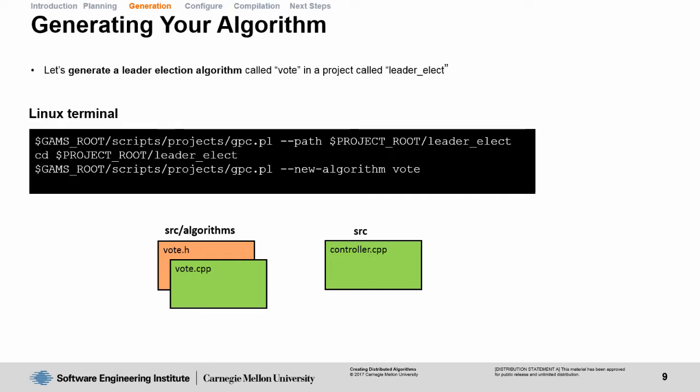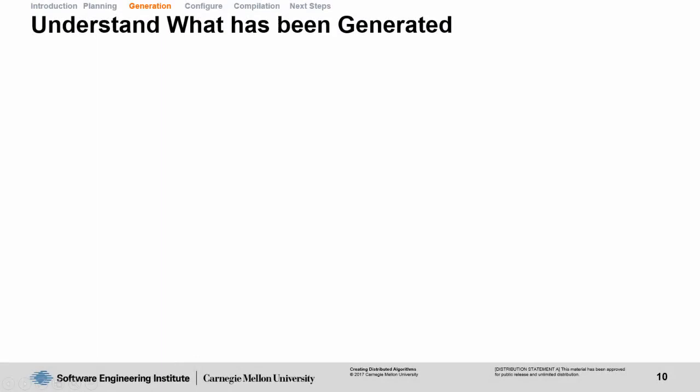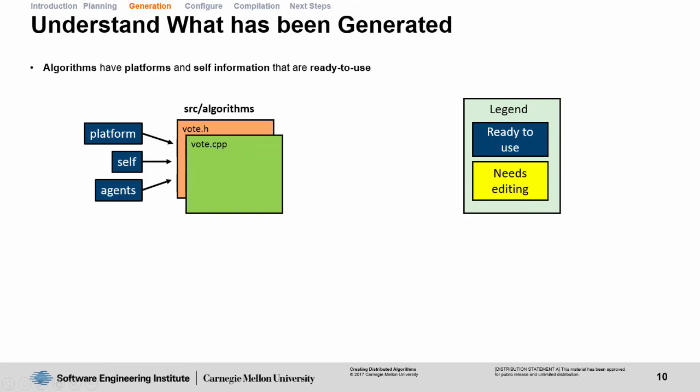After you run these GPC commands, you're going to have three new files created in your directory structure. The first two files are vote.h and vote.cpp in your source algorithms folder. And the third file is the controller.cpp file in your source directory. You're not going to have to modify your controller.cpp file, but we will be modifying our vote.h and vote.cpp file. Don't worry, these files are also included as part of the tutorial materials. Let's talk about what has been generated by the GPC. Algorithms have platforms and self-information that are ready to use. They also have methods analyze, plan, and execute that you can implement in any way you see fit.